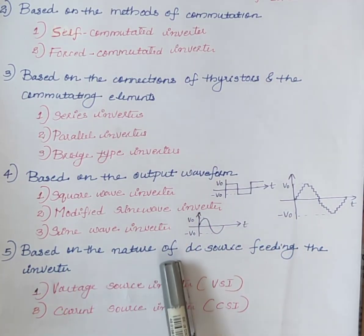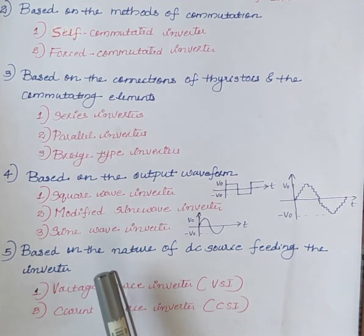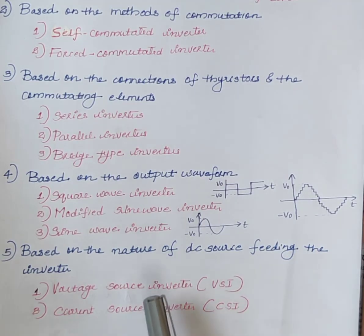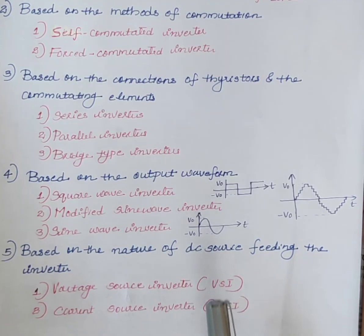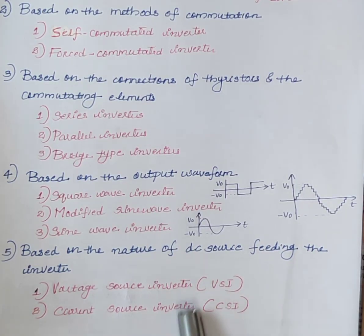Next, based on the nature of the DC source feeding the inverter, inverters are classified into voltage source inverter (VSI) and current source inverter (CSI). If the input DC is a voltage source, the inverter is called a voltage source inverter. If the input to the circuit is a current source, then the inverter is called a current source inverter.